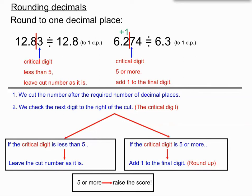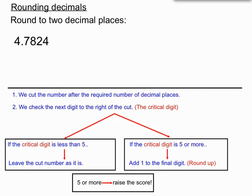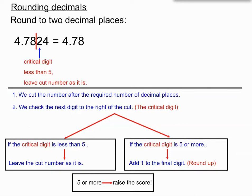Let's look at another couple of rounding examples, this time to two decimal places. I cut after two decimal places — the critical digit is a two, which is less than five, so I leave the cut number just as it is and write down 4.78. I haven't raised the score because that critical digit wasn't five or more. I'll call it an approximation and note that it's rounded to two decimal places.